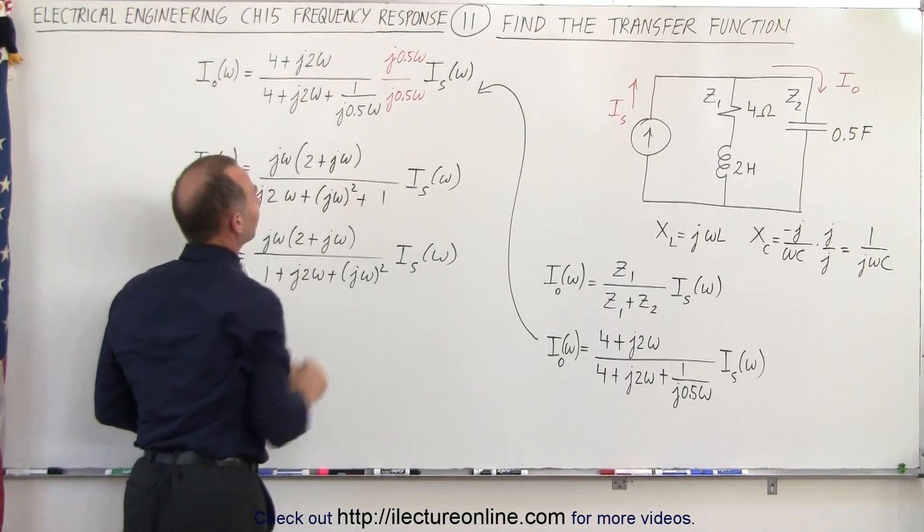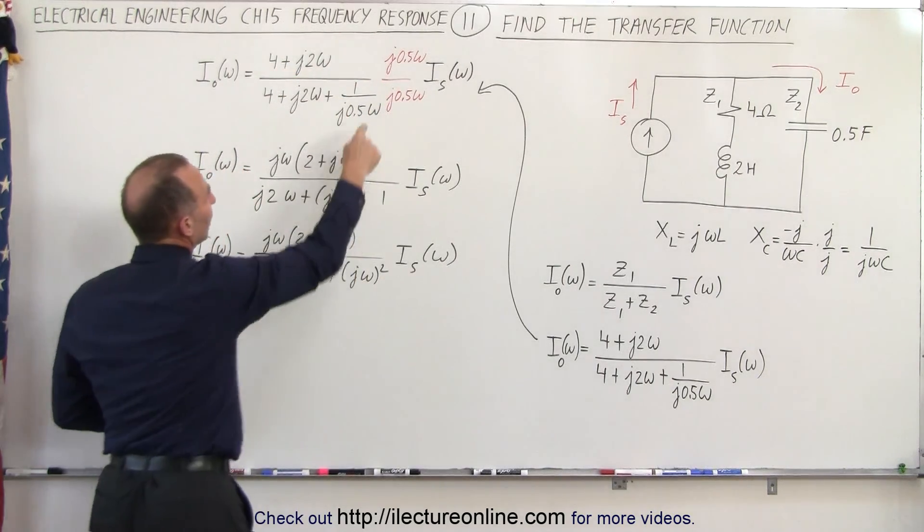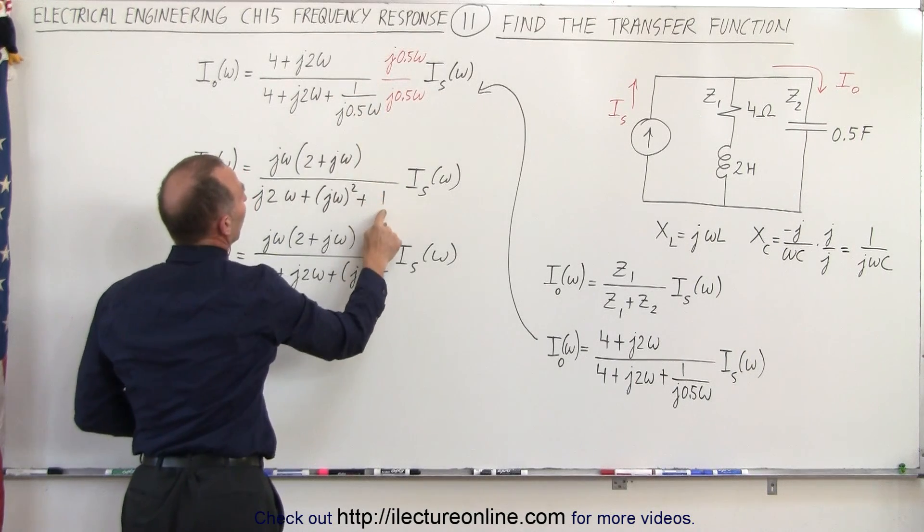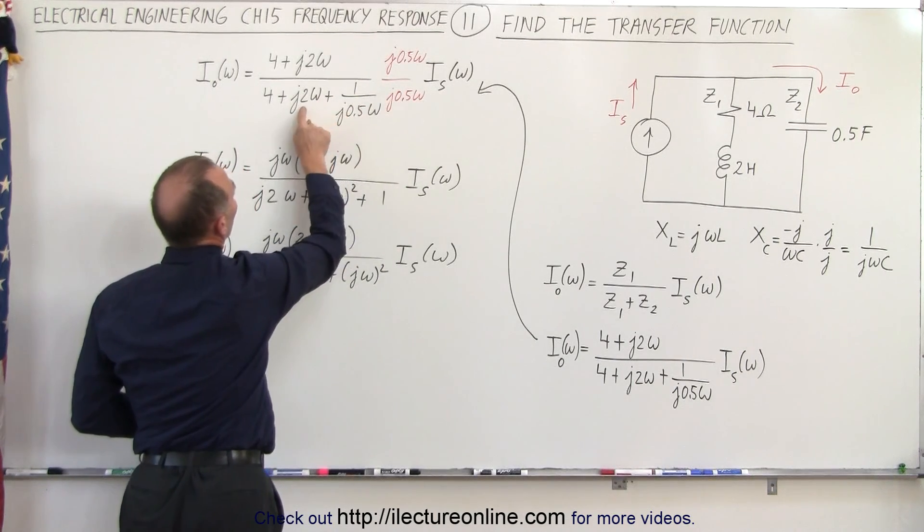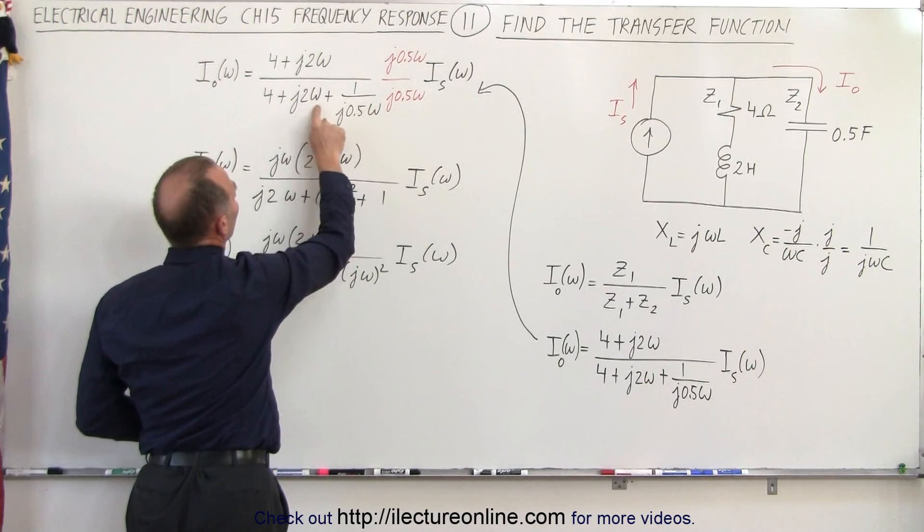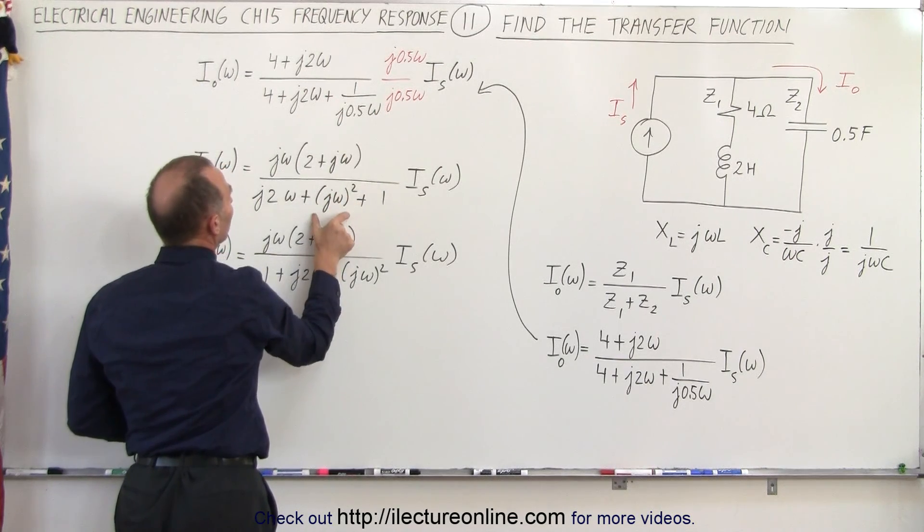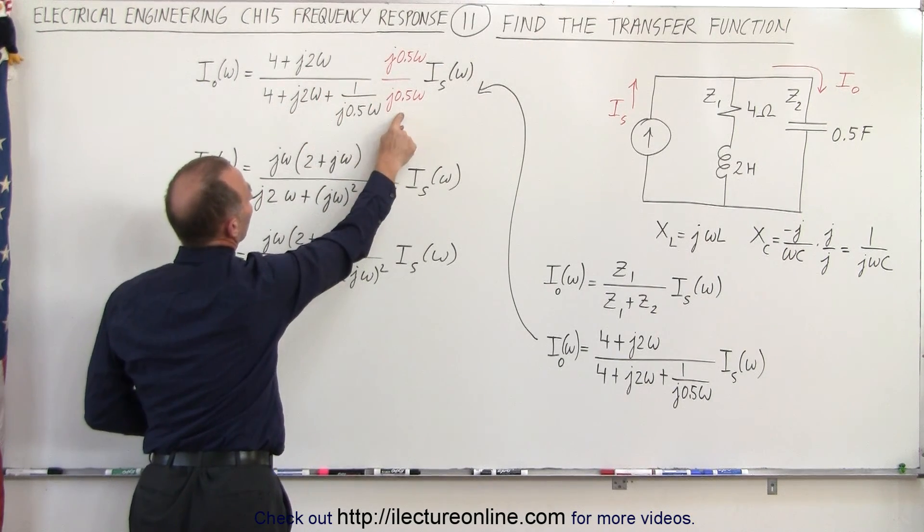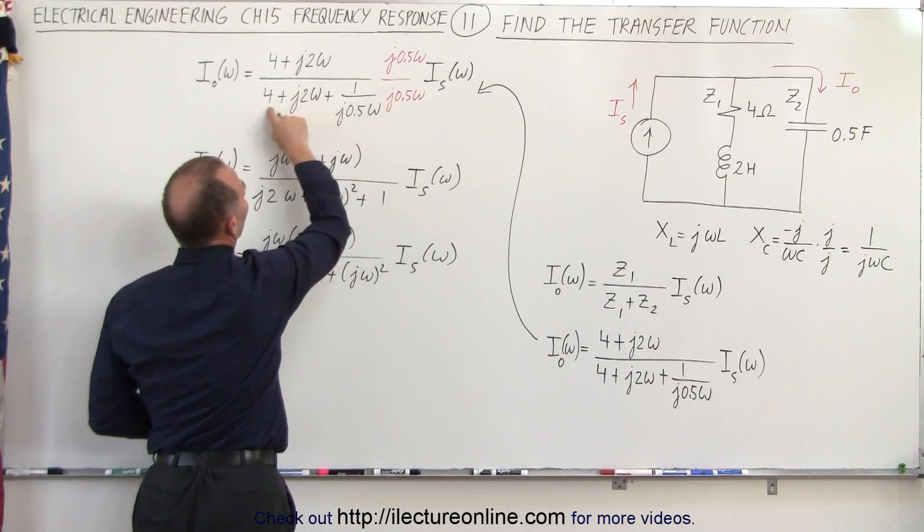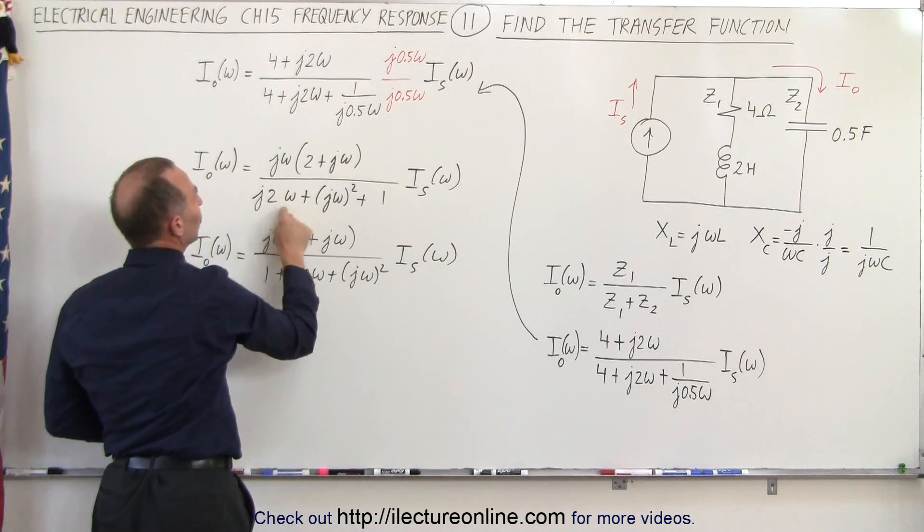In the denominator notice that this times this we simply get 1. This times this, the 2 times 0.5 is 1, and J omega times J omega is J omega squared. And 4 times J times 0.5 omega, 4 times 0.5 is 2 with J and omega.